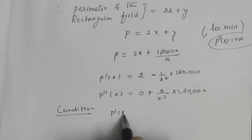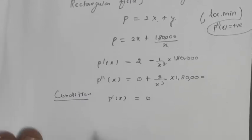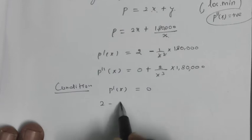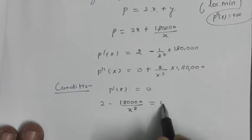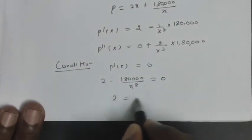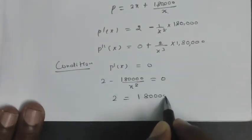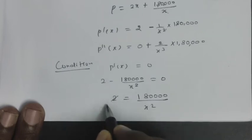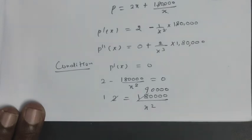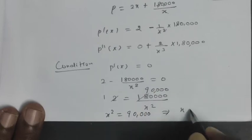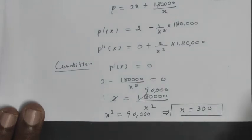P'(x) = 0. So 2 - 180,000/x² = 0. Therefore 2 = 180,000/x². This gives x² = 90,000, so x = 300.